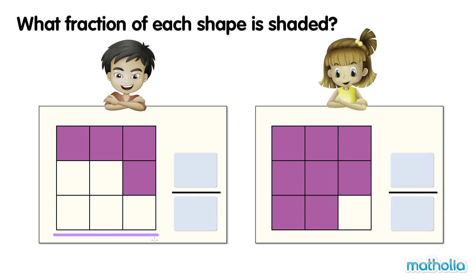This square is divided into nine equal parts. Four of the parts are shaded. Four ninths of the square are shaded.